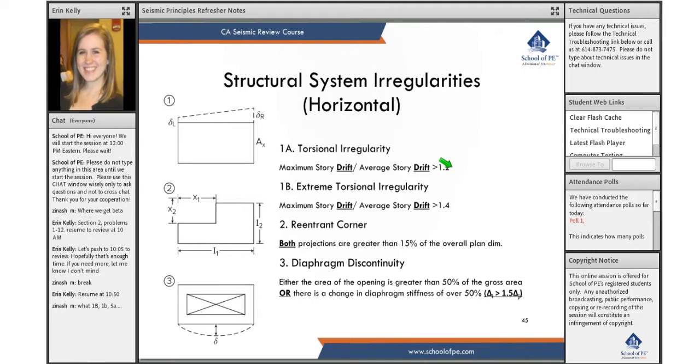And then if that ratio is greater than 1.2, you would have a type 1A. If it's greater than 1.4, that's a significant issue, and you would have an extreme torsional irregularity. And keep in mind that this is for rigid diaphragms only. So if you have a wood frame building, this does not apply.